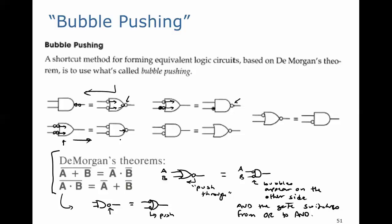So that first bubble, when it goes through, will show up out here at the output, and the gate goes from an OR to an AND. So that's bubble pushing. Bubble pushing is just a graphical logic circuit application of DeMorgan's theorems.